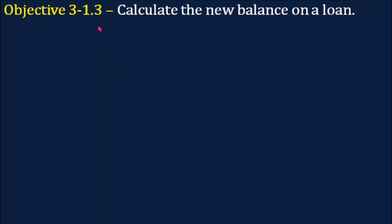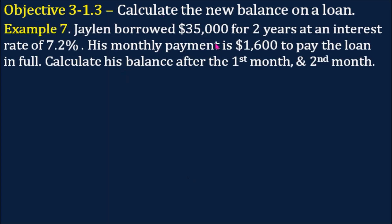Objective number 3: calculate the new balance on a loan. Example number 7: Jalen borrowed $35,000 for two years at an interest rate of 7.2%. His monthly payment is $1,600 to pay the loan in full. Calculate his balance after the first month and the second month.